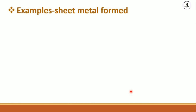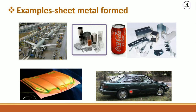Now let's look at some examples of sheet metal forms. These range from small household applications all the way to aerospace and automobile applications. In all these applications, the components have complicated shapes and also require strength. Sheet metals can be easily converted into the desired shape and size, and that is also more economical than other methods.